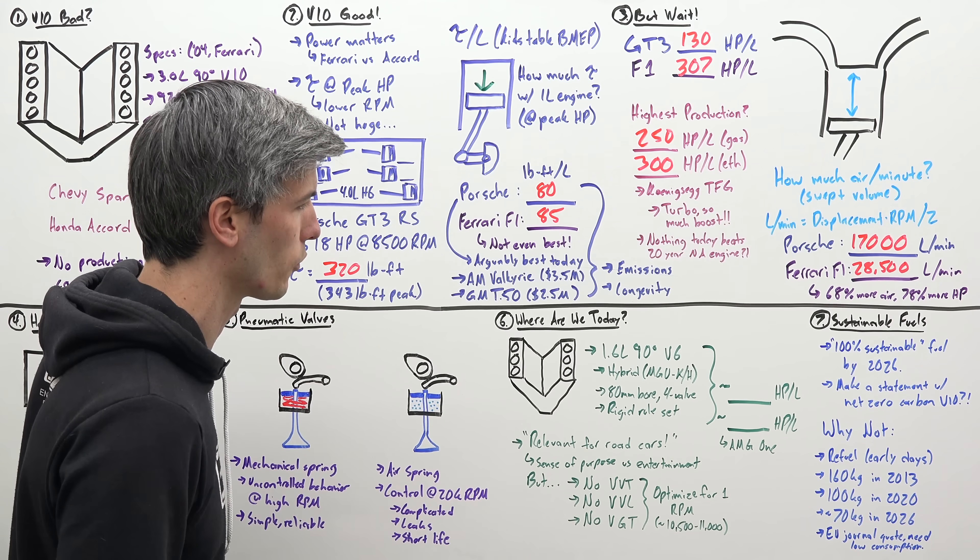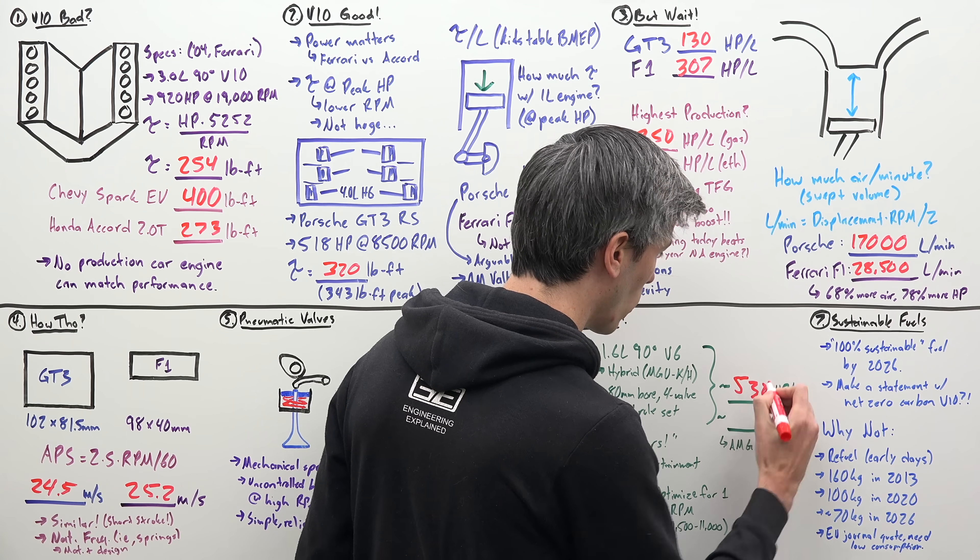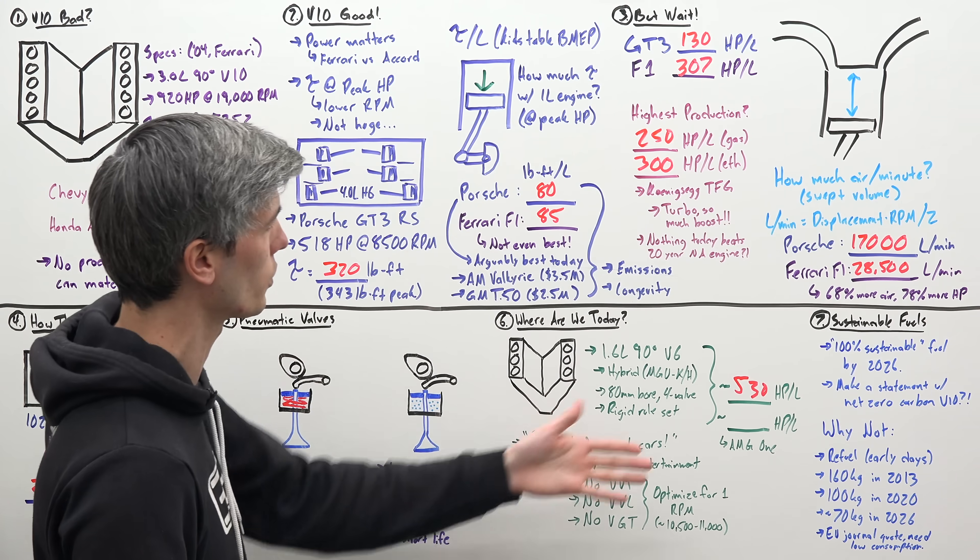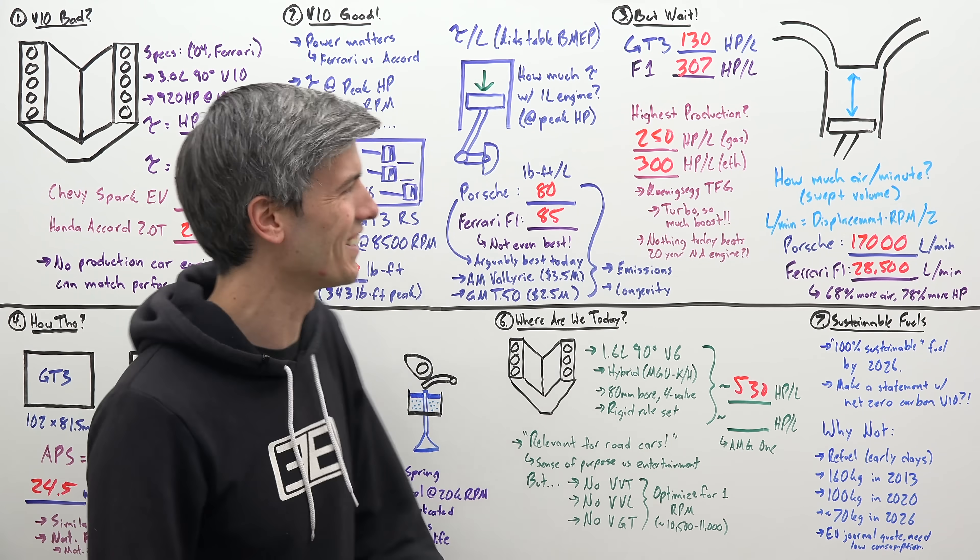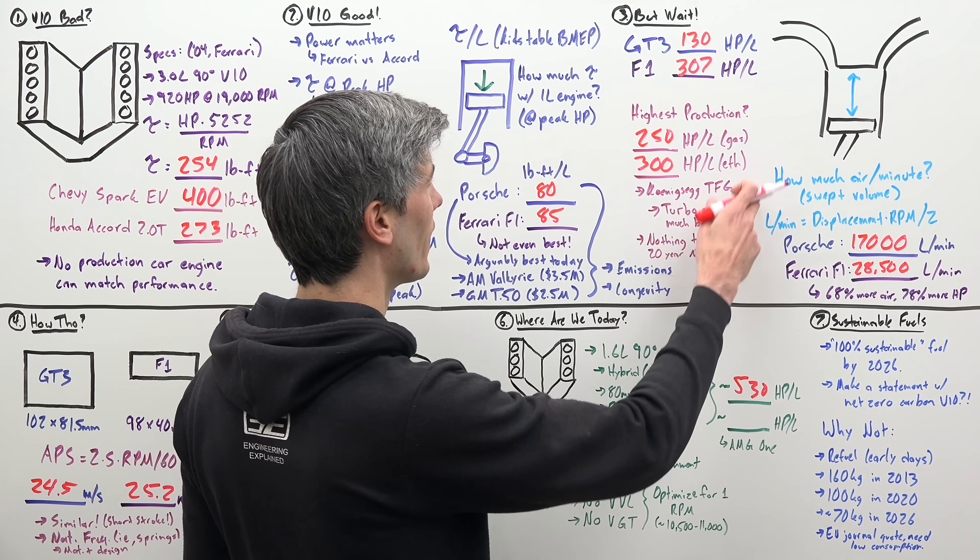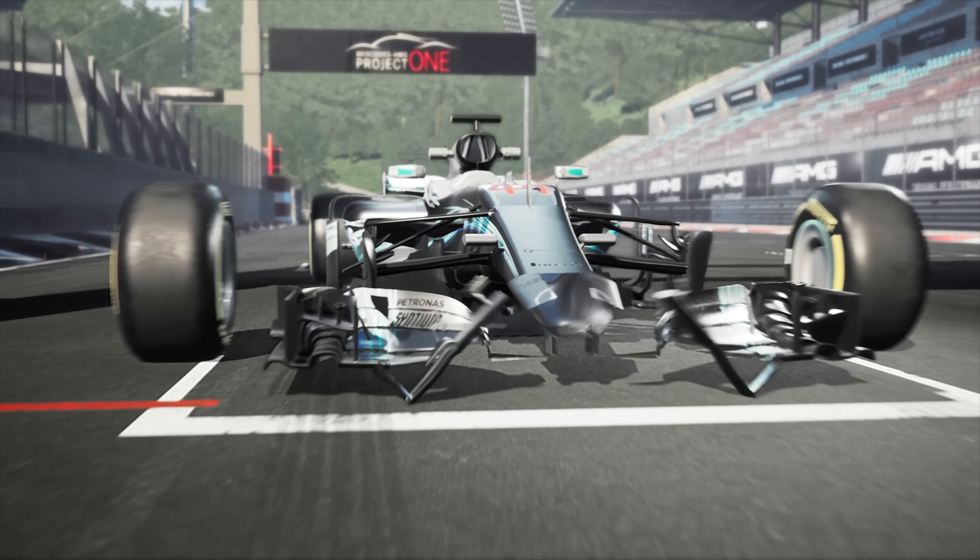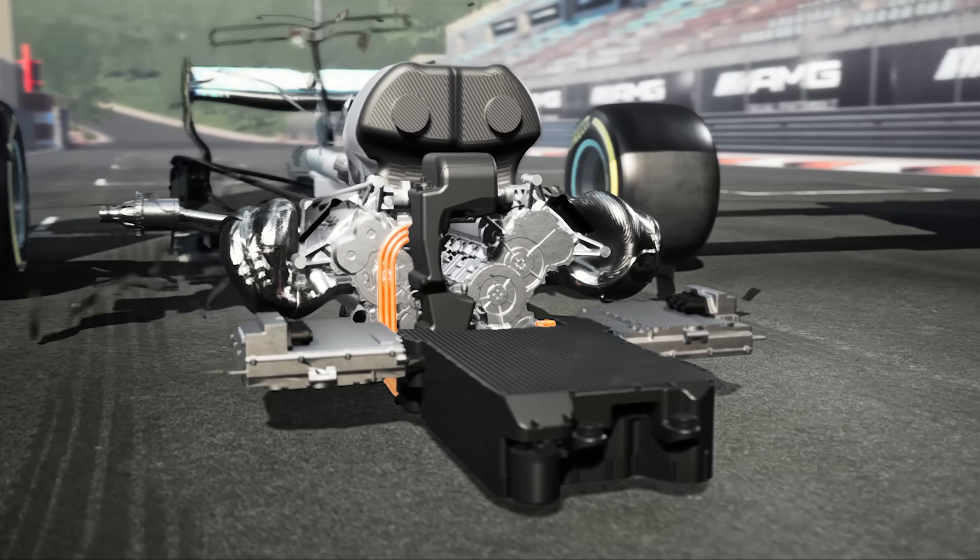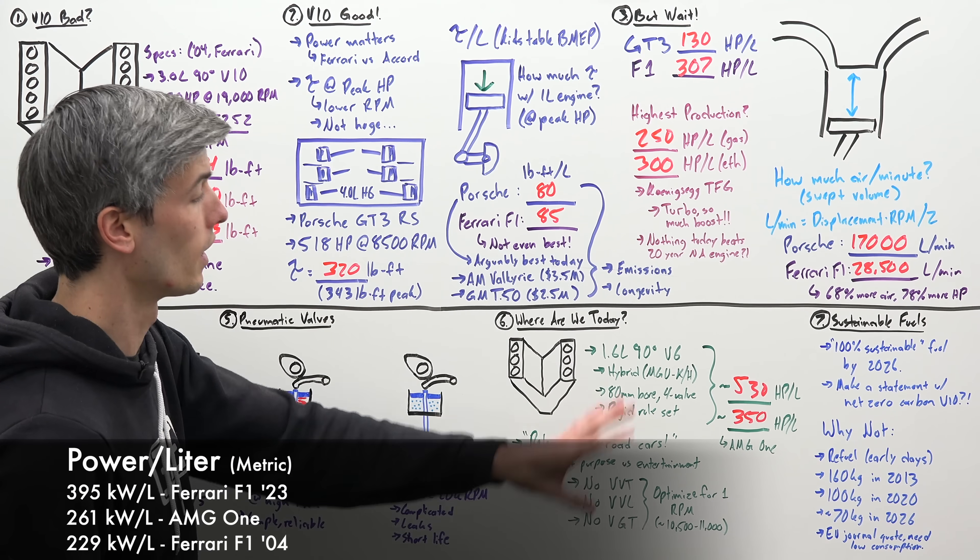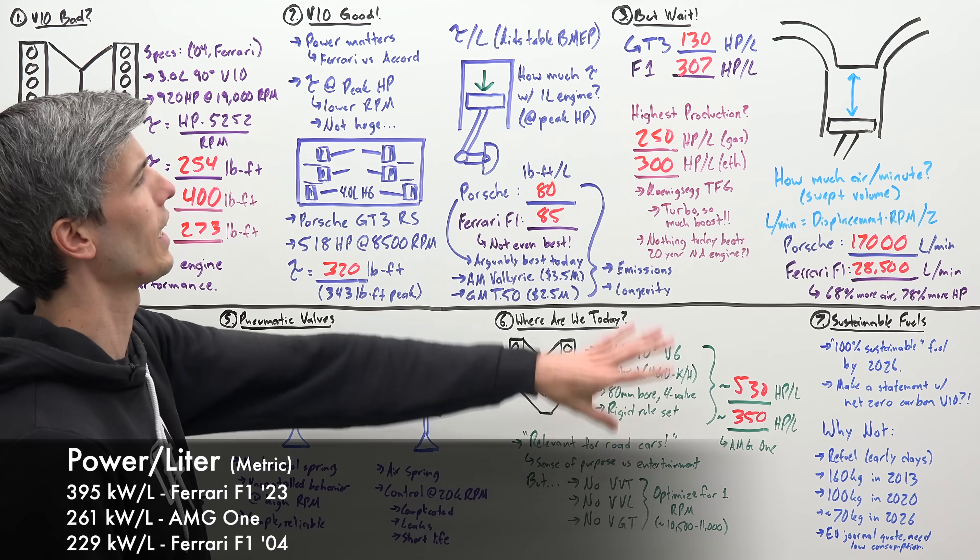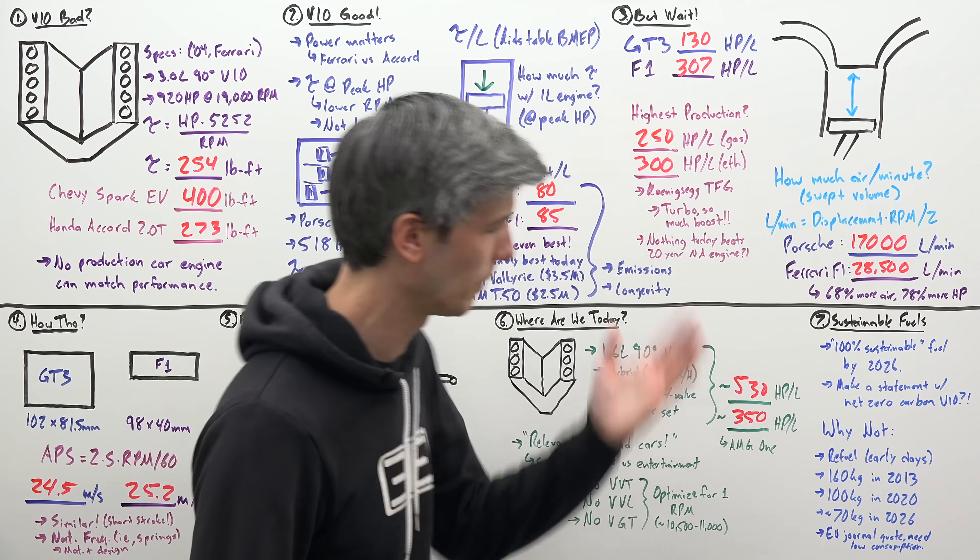But regardless, they are very impressive in how much power they put out. So a 1.6 liter in Formula One today, making about 850 horsepower. In other words, it's 530 horsepower per liter. Of course, it is turbocharged, but a much higher number than the old days of Formula One. And I did kind of lie to y'all when I said that there's nothing in production today that can beat that Ferrari F1 car. If you look at the AMG One, which is a Formula One derived engine used in a production car, it has 350 horsepower per liter for the combustion engine portion of that vehicle. So it can beat a Formula One engine from 20 years ago. Is it actually a production car? I don't know. Did I lie to y'all? Maybe so. My bad.